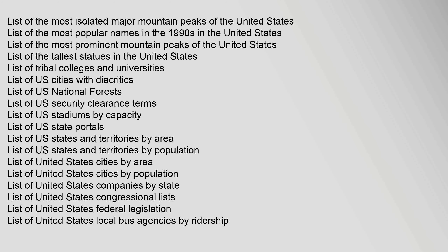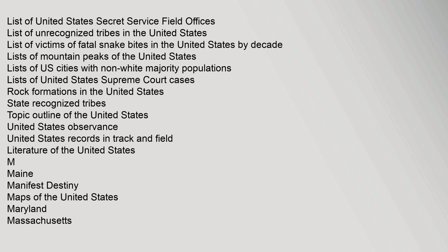List of the Tallest Statues in the United States, List of Tribal Colleges and Universities, List of U.S. Cities with Diacritics, List of U.S. National Forests, List of U.S. Security Clearance Terms, List of U.S. Stadiums by Capacity, List of U.S. State Portals, List of U.S. States and Territories by Area, List of U.S. States and Territories by Population, List of United States Cities by Area, List of United States Cities by Population, List of United States Companies by State, List of United States Congressional Lists, List of United States Federal Legislation, List of United States Local Bus Agencies by Ridership, List of United States Secret Service Field Offices, List of Unrecognized Tribes in the United States, List of Victims of Fatal Snake Bites in the United States by Decade, Lists of Mountain Peaks of the United States, Lists of U.S. Cities with Non-White Majority Populations, Lists of United States Supreme Court Cases, Rock Formations in the United States, State Recognized Tribes, Topic Outline of the United States, United States Observance, United States Records in Track and Field.